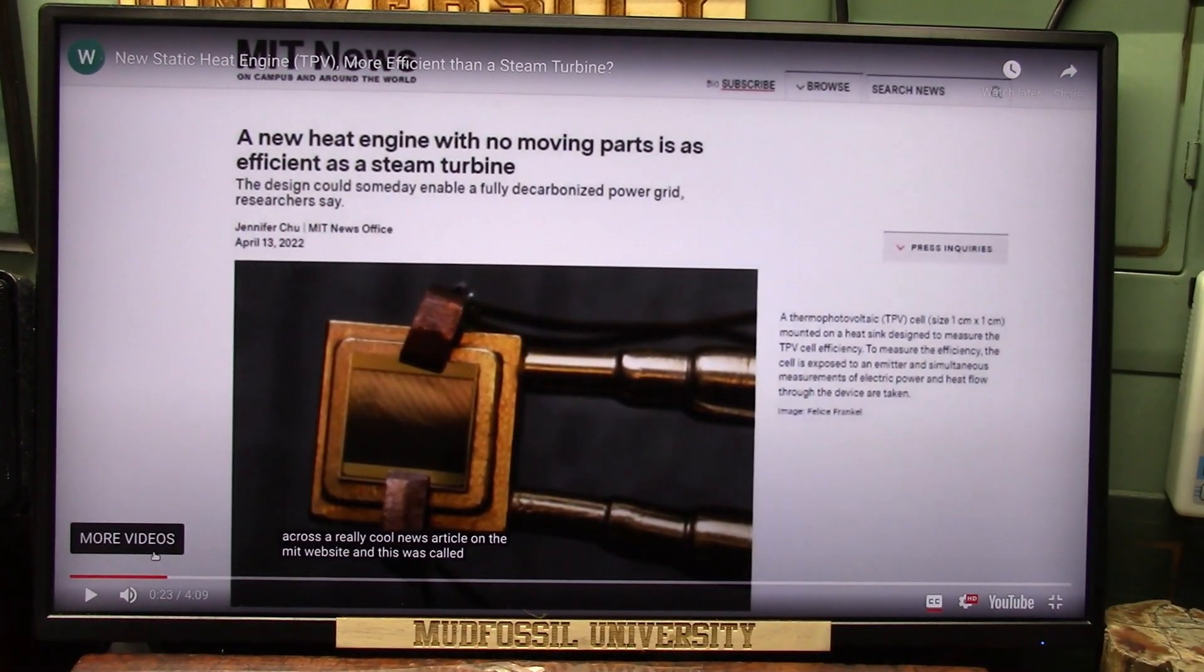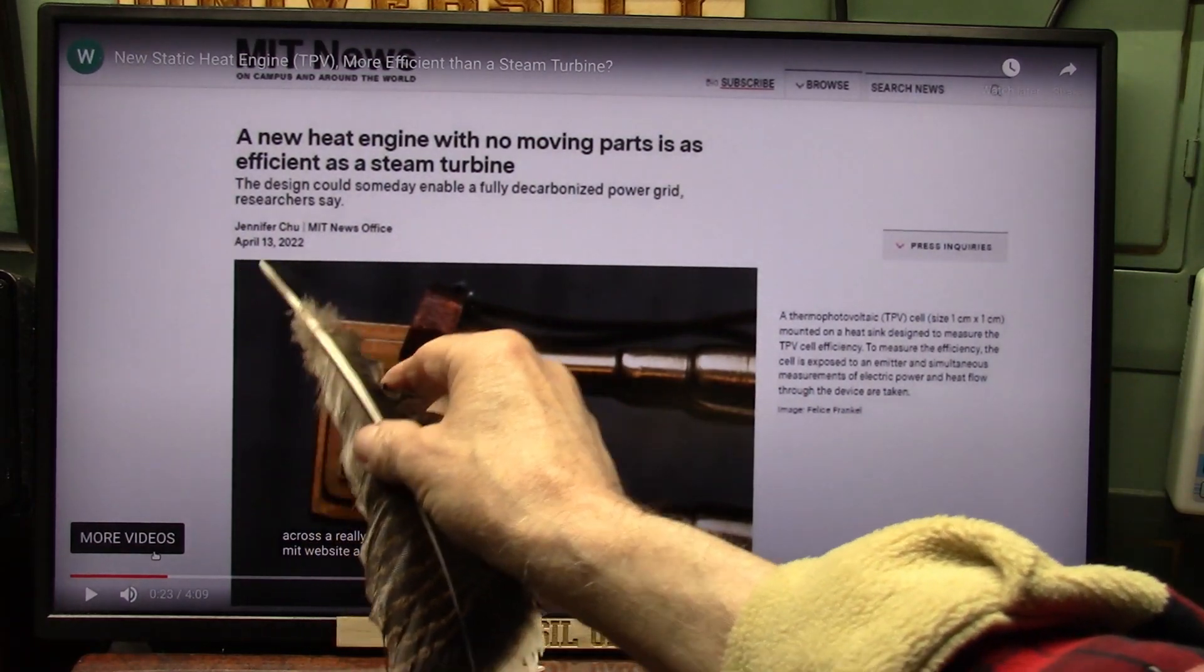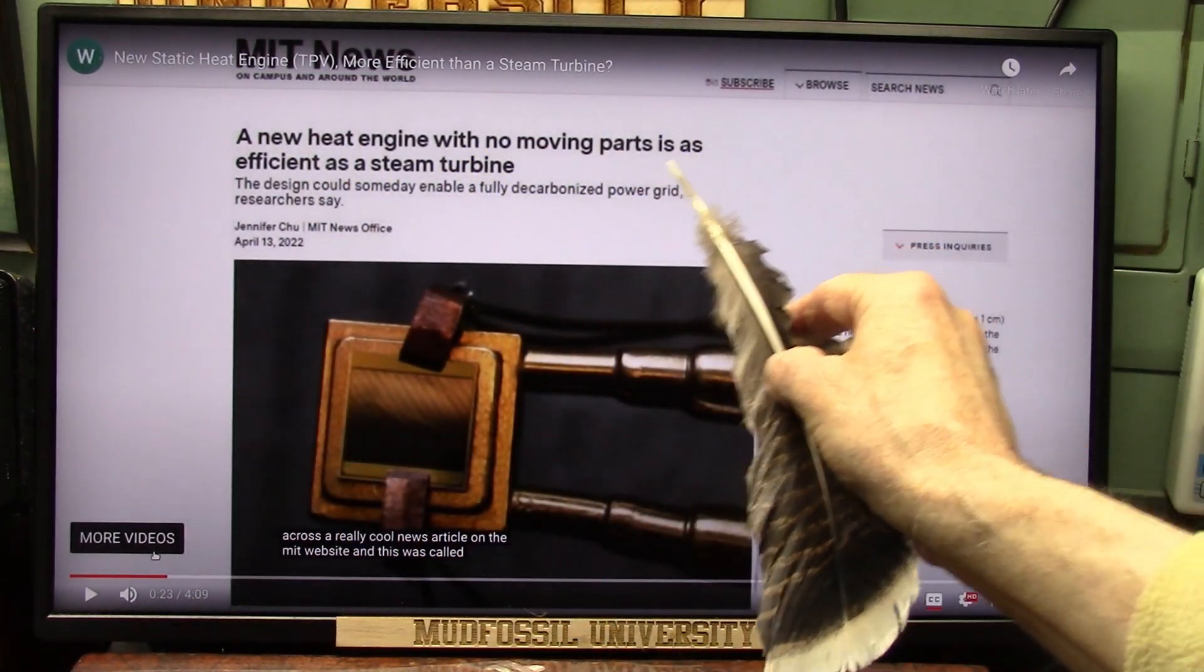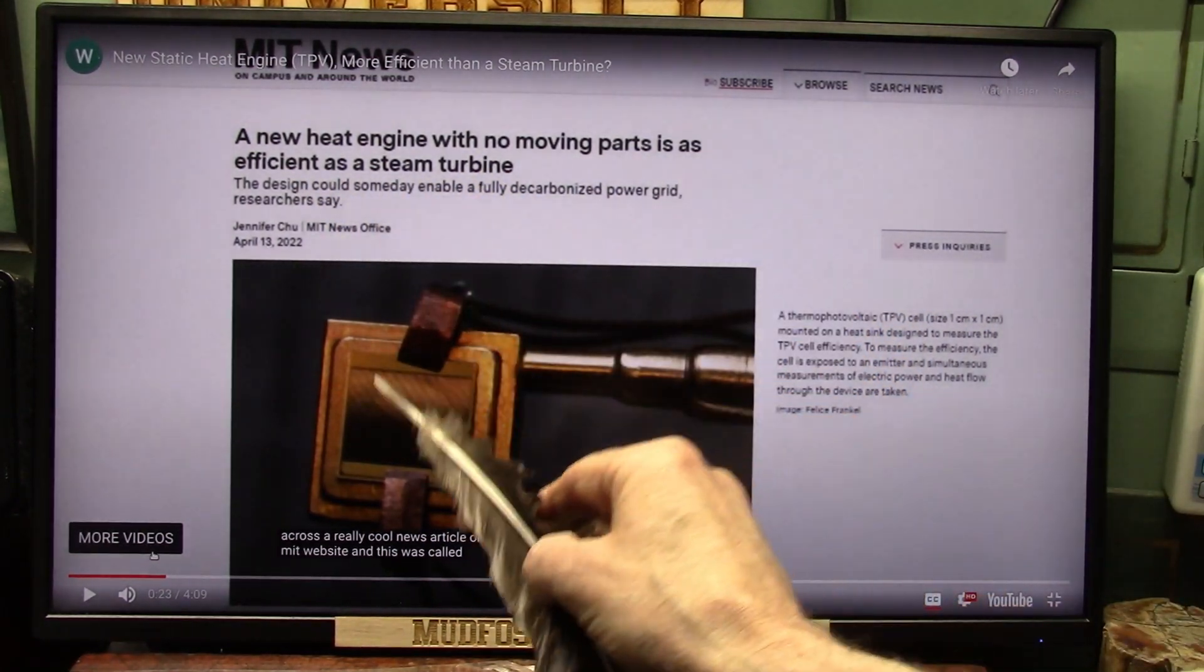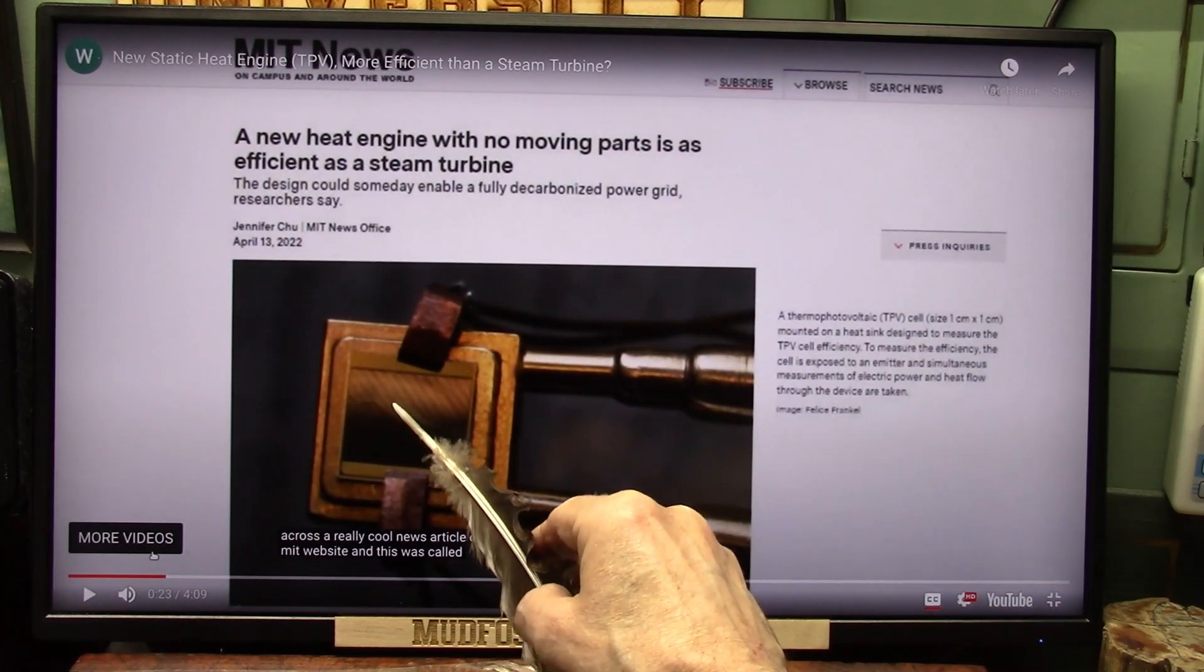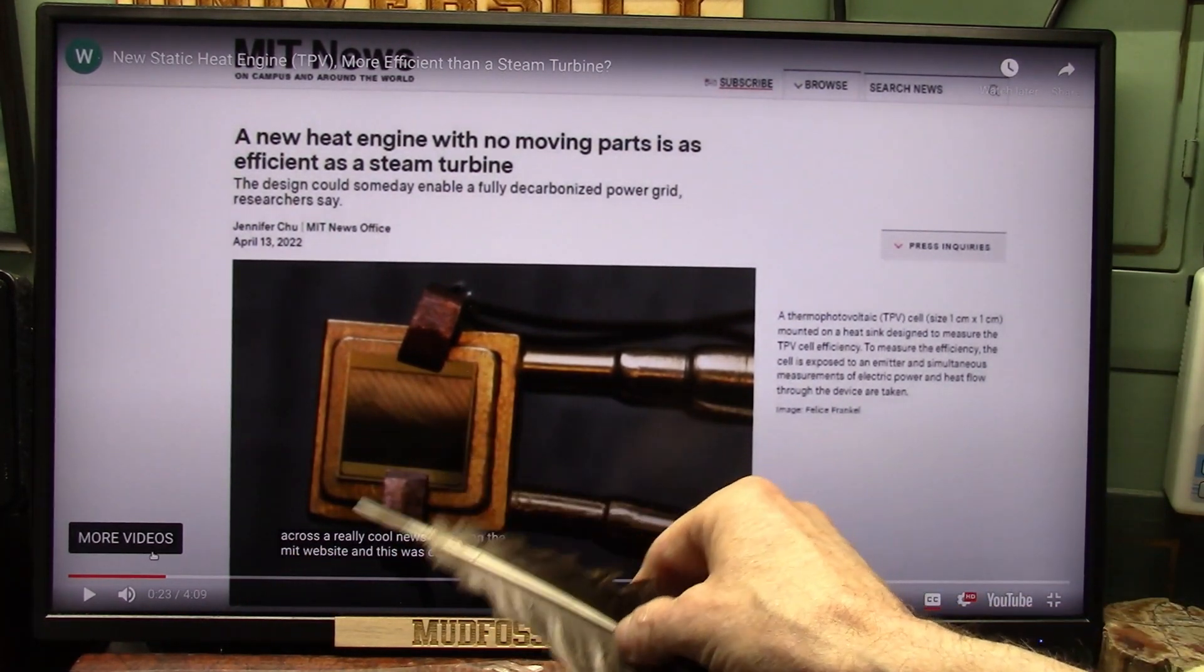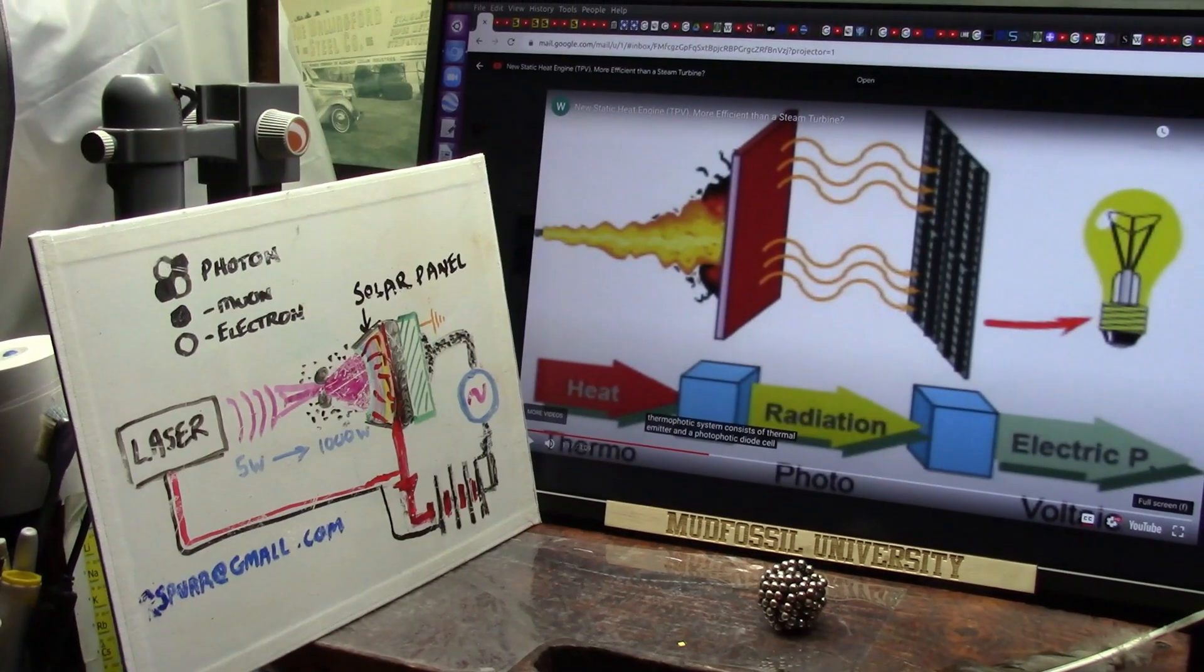Okay my friends, this is going to be fabulous. This is MIT news, just recently: a new heat engine with no moving parts is as efficient as a steam turbine, which is quite efficient. What they do is use heat to create electricity and they use the electricity as the engine.